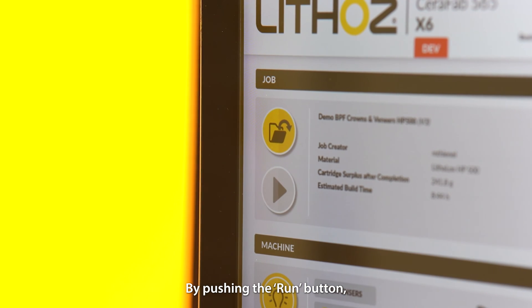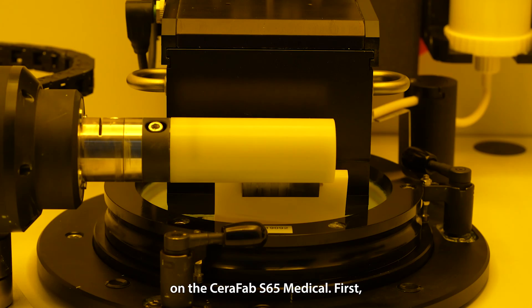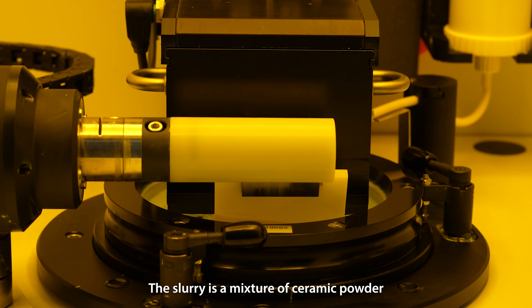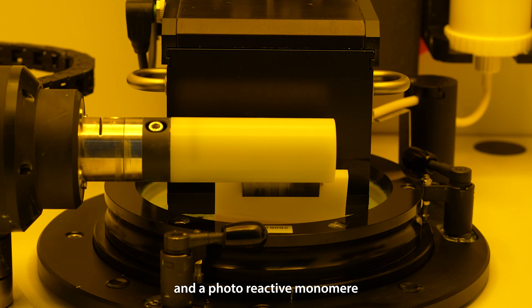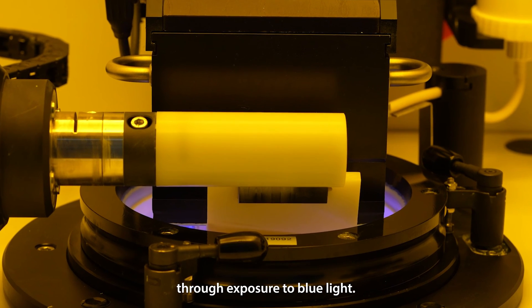By pushing the run button the print is started on the Seraphab S65 Medical. First, the build platform contacts the vat to perfectly adjust the height. The slurry is a mixture of ceramic powder and a photoreactive monomer that is polymerized through exposure to blue light.